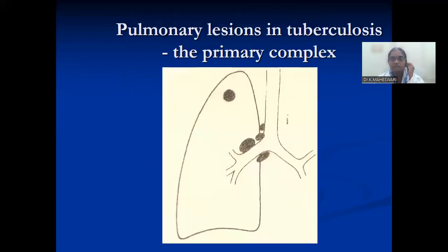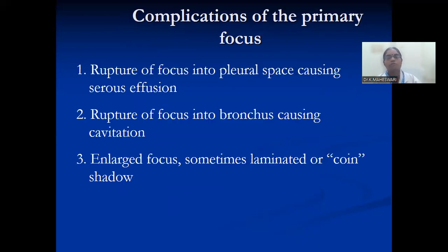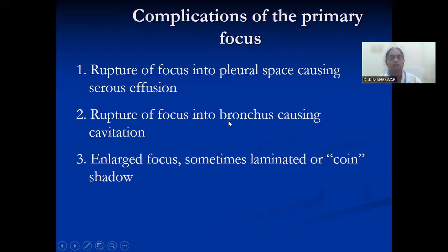Coming to pulmonary lesions in tuberculosis — the primary complex. Here you can see the Ghon focus. The complications of the primary focus include: rupture of the focus into the pleural space causing pneumothorax, rupture into the bronchus causing cavitation, and enlarged focus sometimes showing laminated calcified shadow.